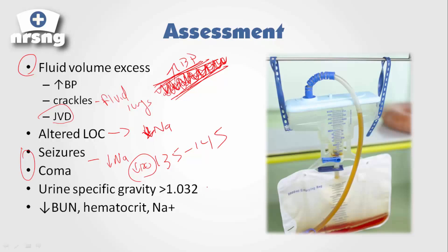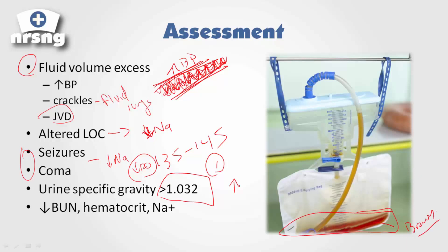Our urine specific gravity is going to increase. Specific gravity is a way to tell how concentrated our urine is — the specific gravity of water is one. Since the kidneys are hyper-concentrating this urine, urine specific gravity increases as water stays in the body. Because we have all this extra fluid, our BUN and hematocrit are going to go down — the percent of RBCs decreases because there's more fluid diluting the blood. Sodium could drop to the 120s, and BUN goes down as well.